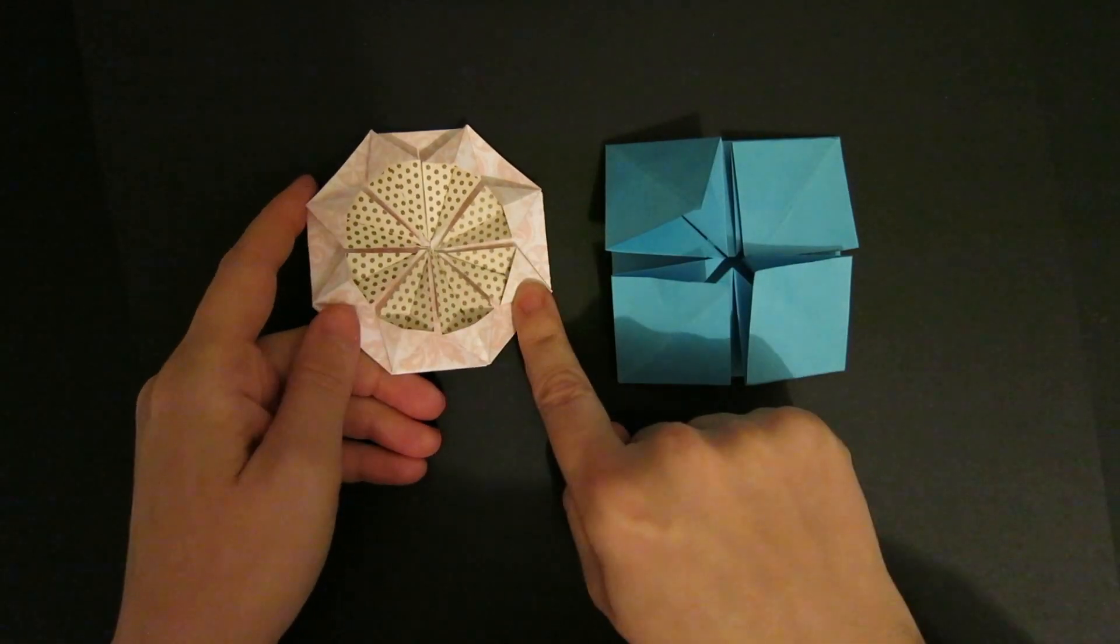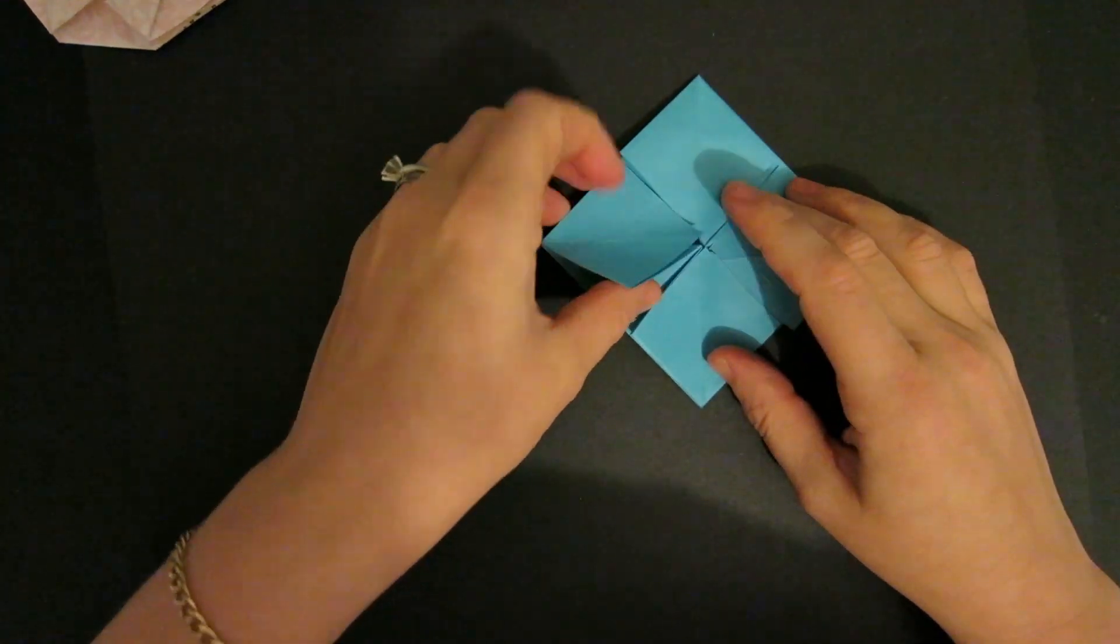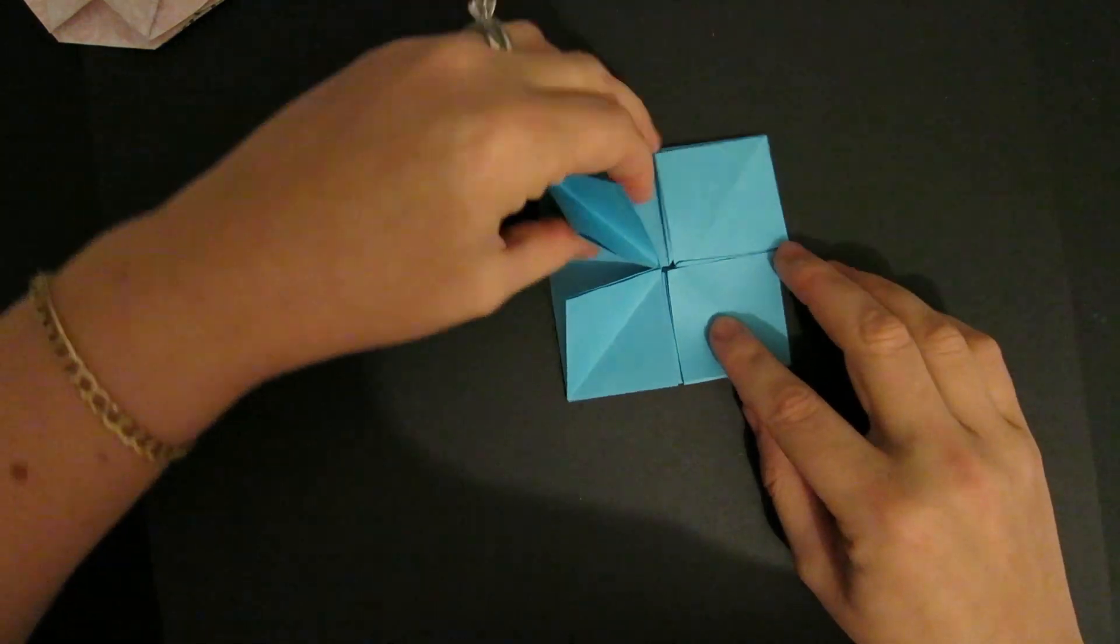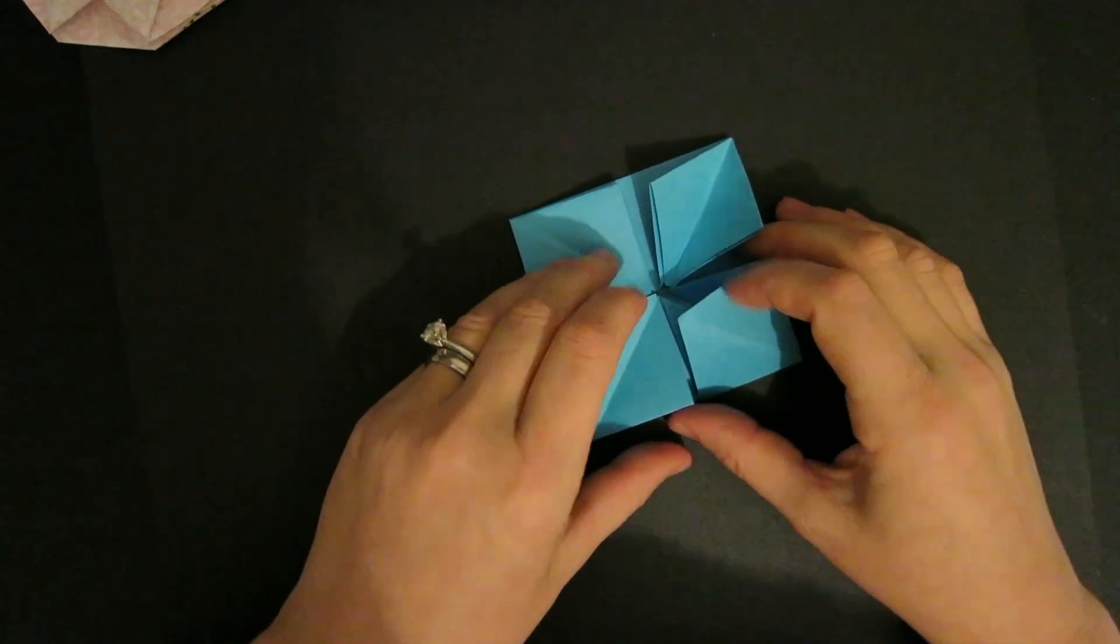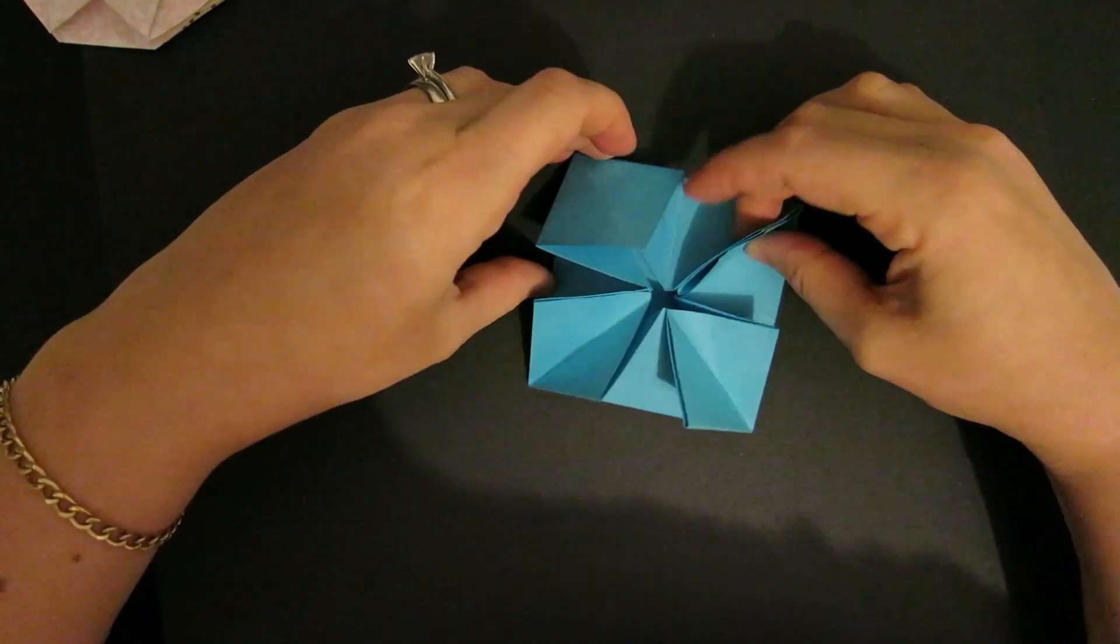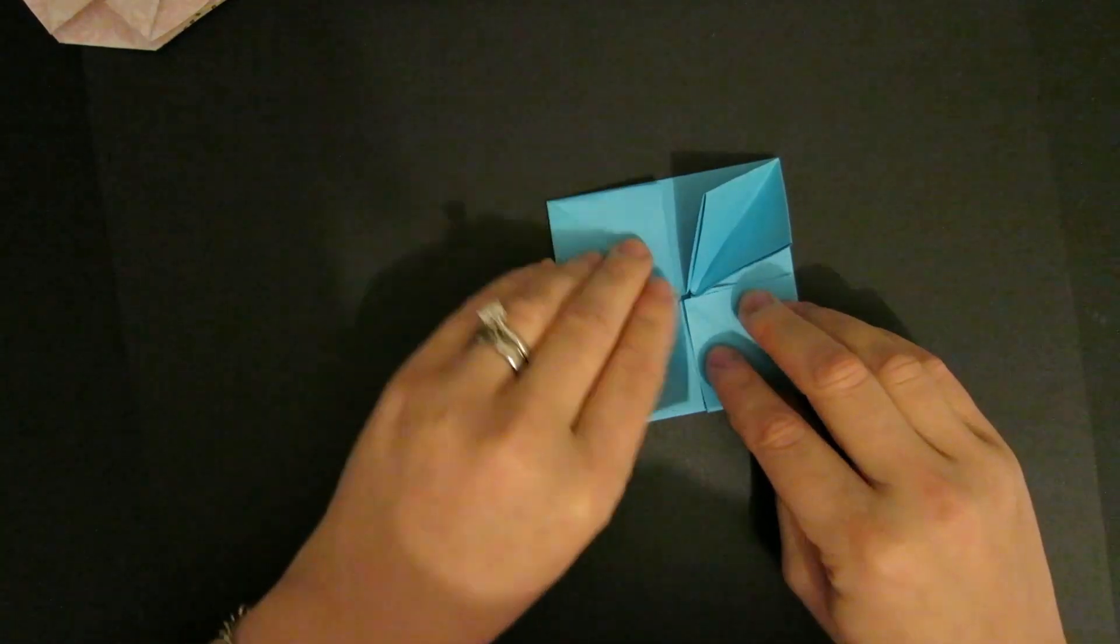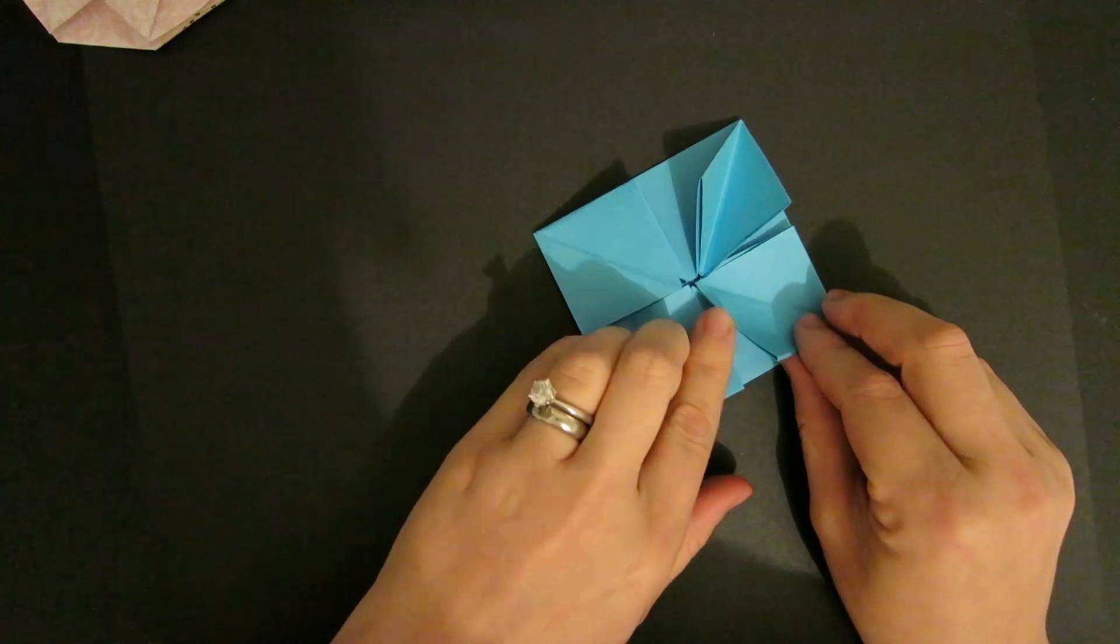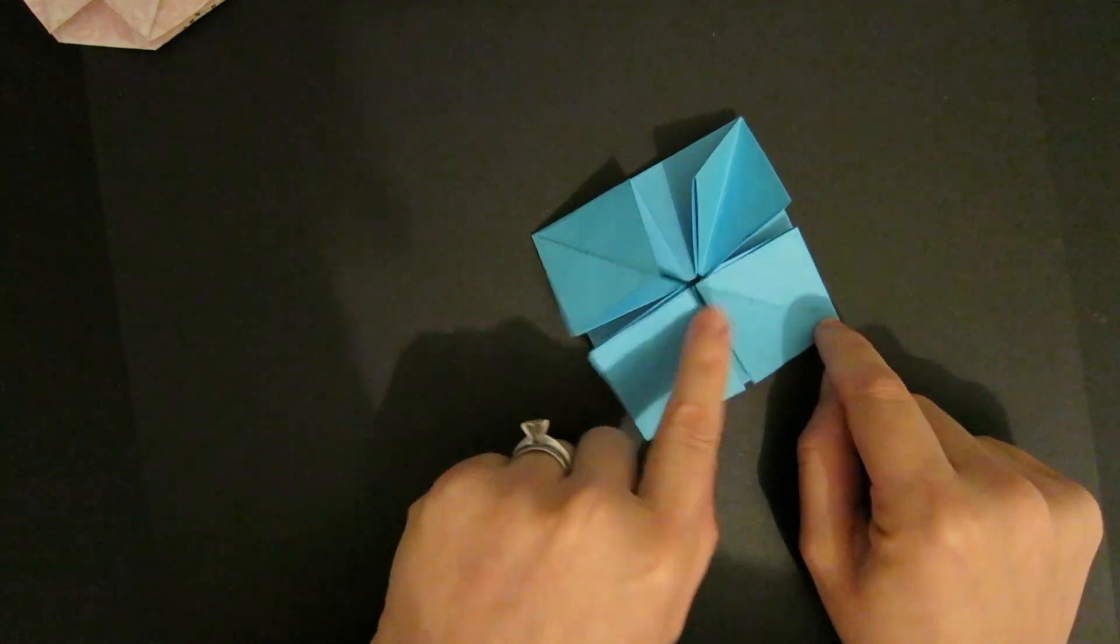We're almost there guys we are about to turn this model into this. Now you'll notice that all the way around you've got flaps coming up off of the top of your model and you should have the same sort of flaps four times, so one two three four.